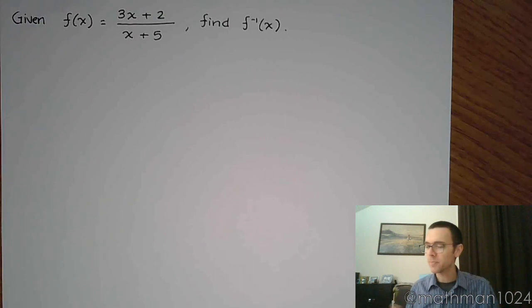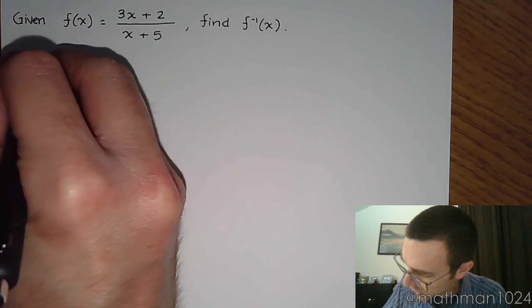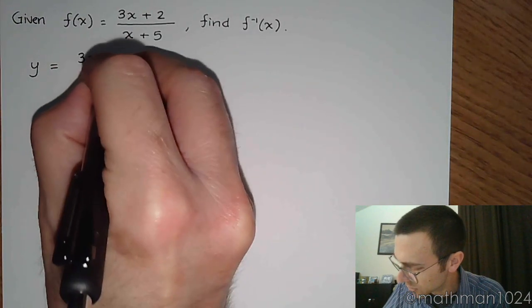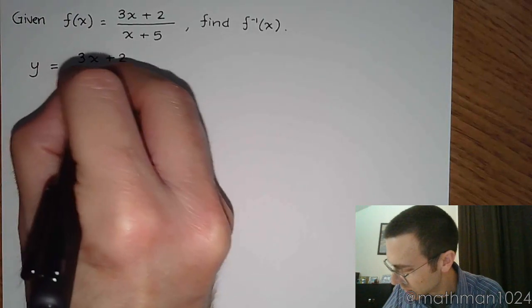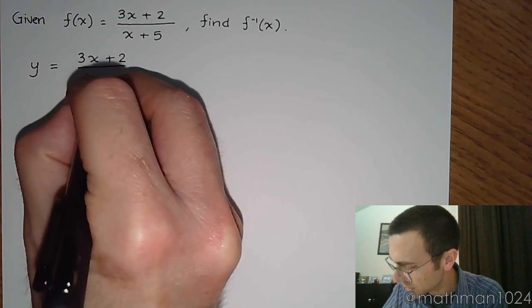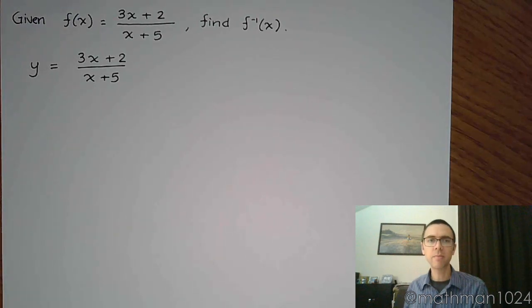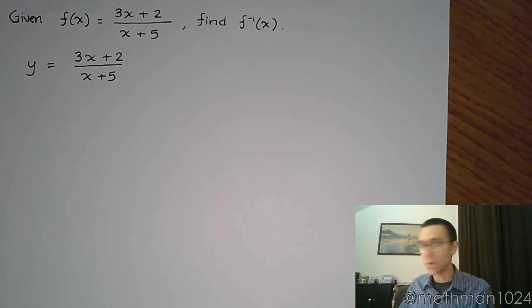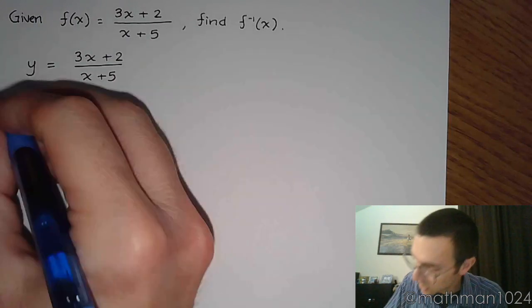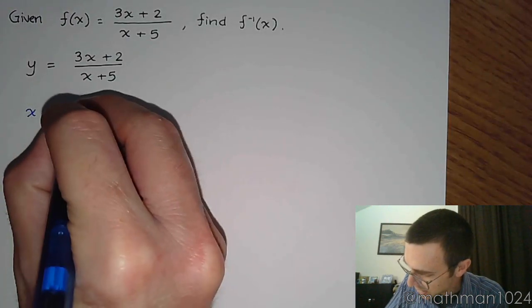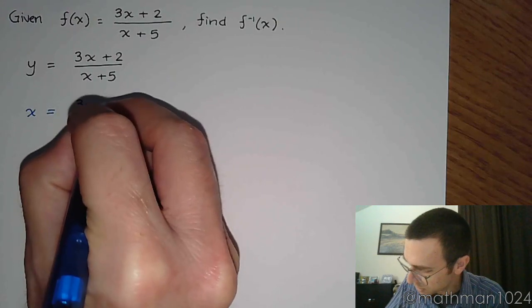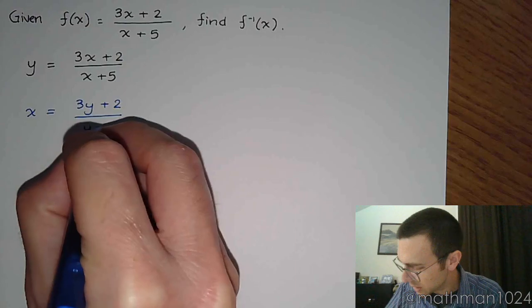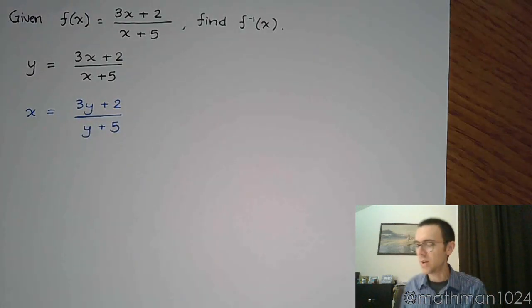Now the first step here is to rewrite f(x) as y. So y is equal to (3x + 2)/(x + 5). Well then we're supposed to replace the x with y's and the y's with x. So that now becomes x is equal to (3y + 2)/(y + 5).